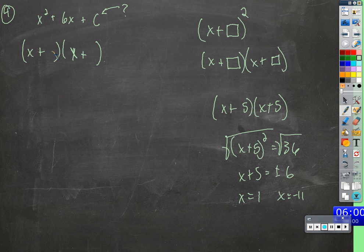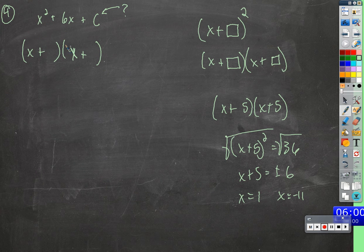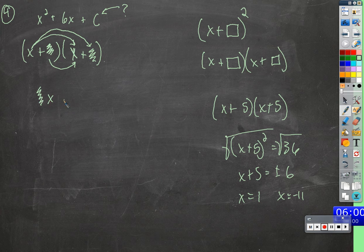Whatever goes here and the identical thing here, it needs to work out so that we can make c whatever we want it to be. We need to get an x squared — that will happen when we do x times x. We're also going to multiply x times this number and this number times x. Whatever this is — and it's the exact same thing — we're going to get squiggly x plus squiggly x equals 6x. Those two need to add together to get 6x.